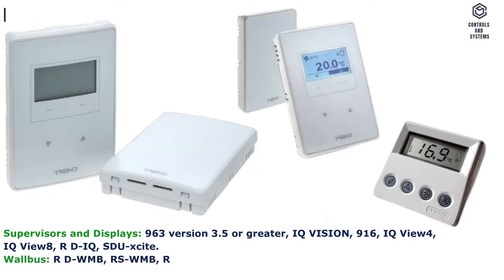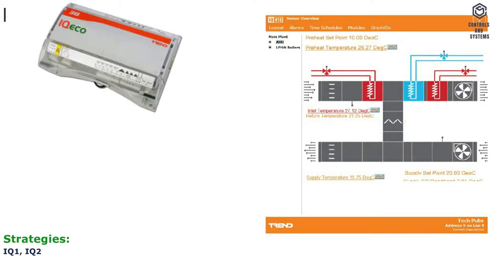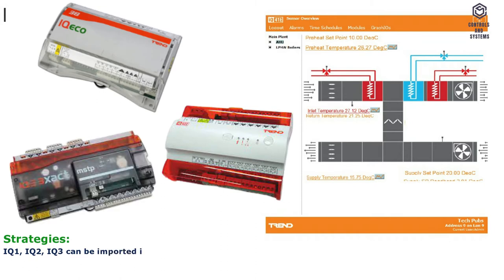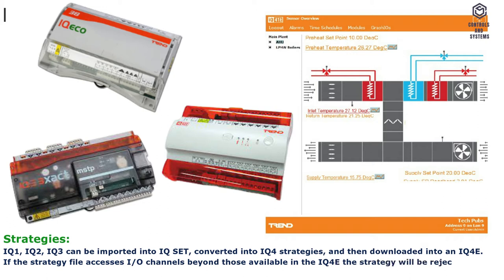RDWMB, RSWMB, RVWMB. Utility Software: IQ Set version 7.60 or greater. Strategies: IQ 1, IQ 2. IQ 1, IQ 2, and IQ 3 strategies can be imported into IQ Set, converted into IQ 4 strategies, and then downloaded into an IQ4E. If the strategy file accesses I/O channels beyond those available in the IQ4E, the strategy will be rejected.